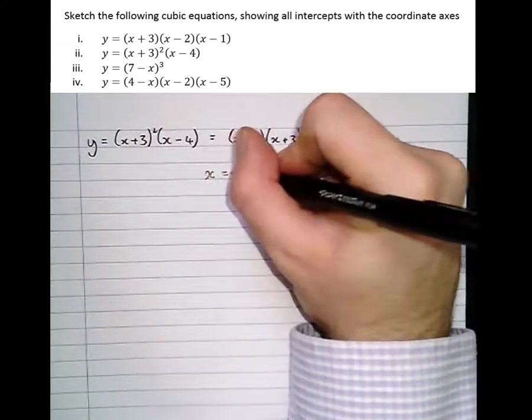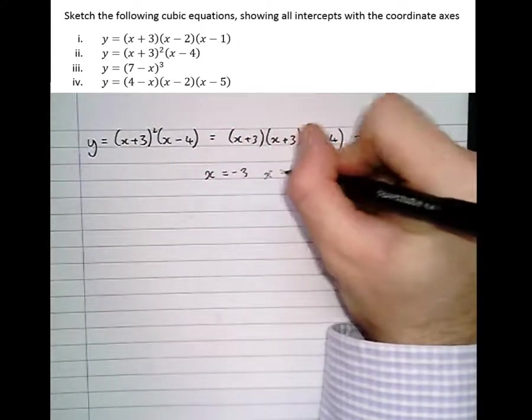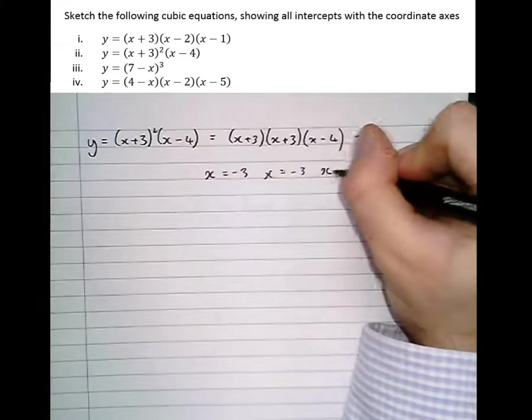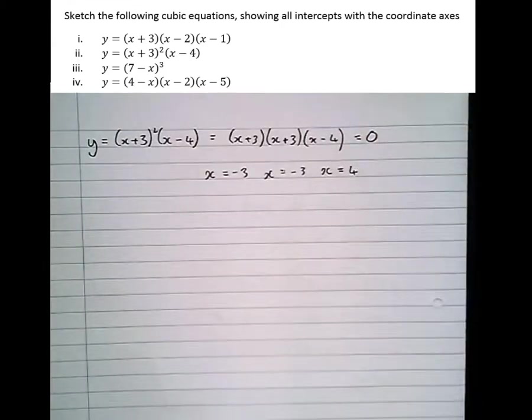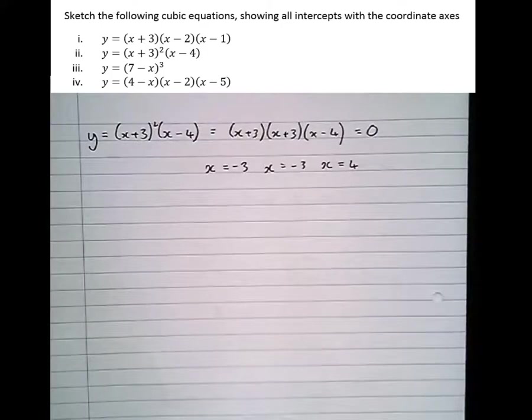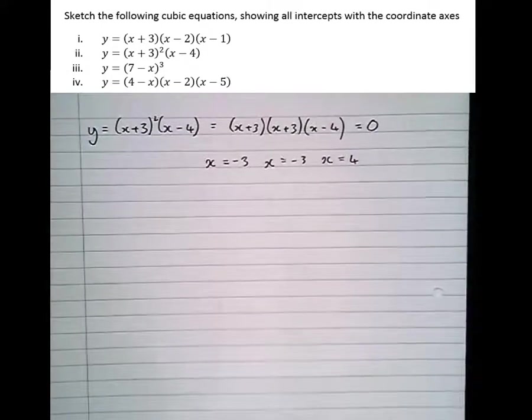So I can see here that x equals minus 3, x equals minus 3, and x equals 4. Three roots, although two of them are the same here. We've got a double root. We'll show how to deal with that in just a second.